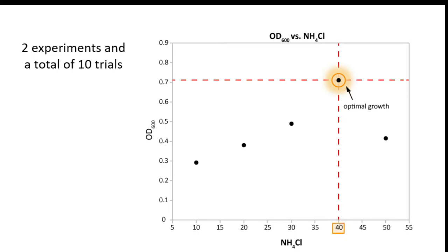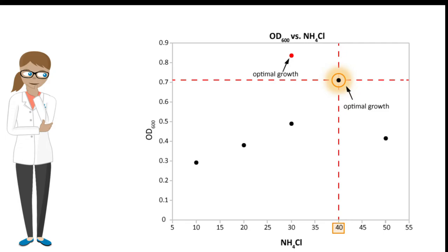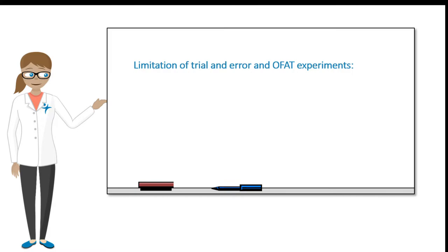In two experiments and a total of 10 trials, Anna has identified the concentrations for MOPS buffer and ammonium chloride that will result in the highest growth. But what if the optimal concentrations were actually here instead? That is, what if maximum growth is obtained when MOPS buffer concentration is at 10 millimolar and ammonium chloride concentration is at 30 millimolar?